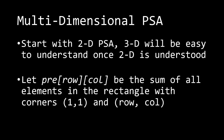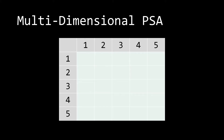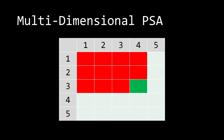We're going to define pre[row][column] as the sum of all elements in the rectangle with corners (1,1) to (row, column). For example, if row equals 3 and column equals 4, and we have a 5x5 2D array, then pre[3][4] corresponds to the green region at row 3, column 4 — and the prefix sum array at (3,4) is the sum of all elements up to that point, meaning all of the red region and the green region.